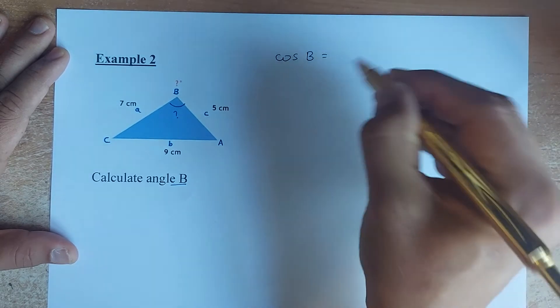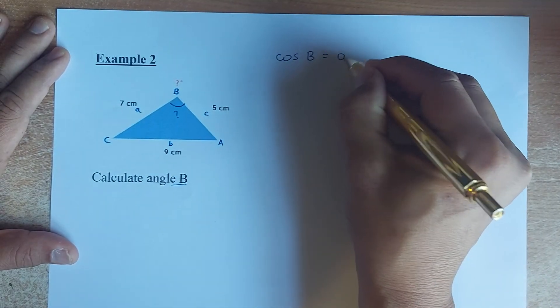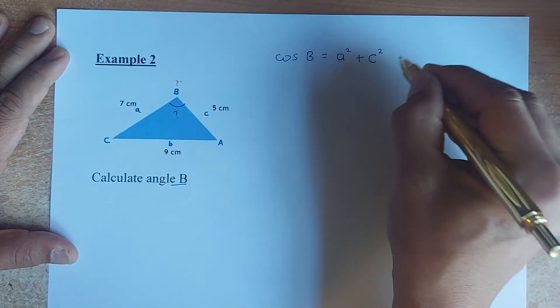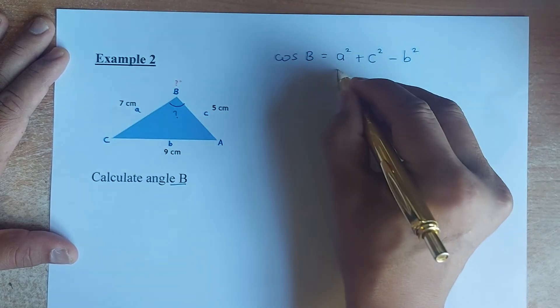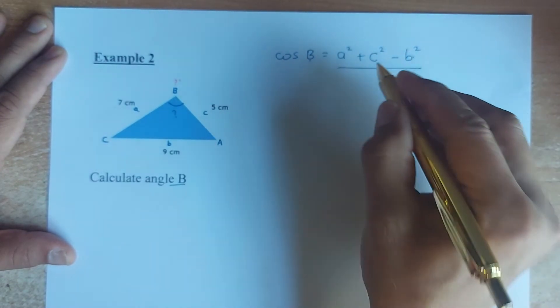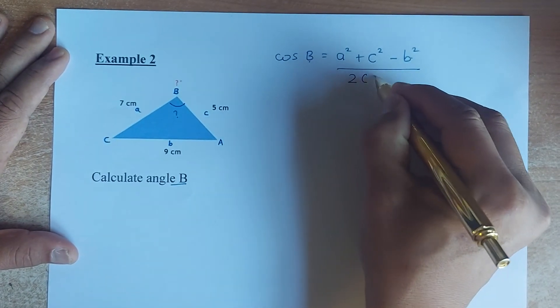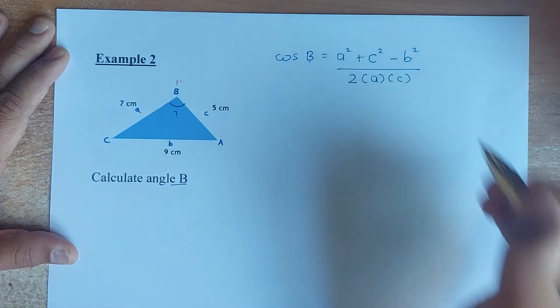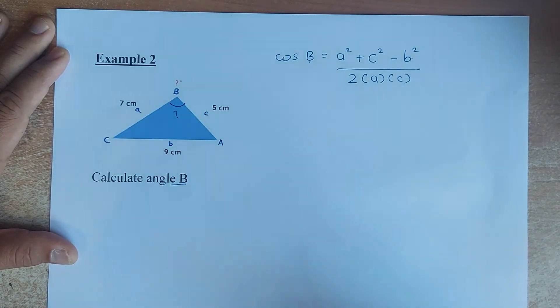So the formula to calculate angle B is cosine B equals to the reverse. So it can be A squared plus C squared minus B squared. As I said before, the B and the B had to be the same at the start and end. And then to multiply by 2 times A times C. So you can replace B or C with any other letters, X, Y, or Z. So the same principle applied.